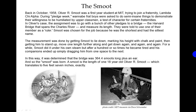Smoot was chosen for the job because he was the shortest and had the silliest name. The measurement was done by getting Smoot to lie down, marking his height with chalk and paint, then getting him to stand up, move one length further along, and get down again. After about a hundred times he became tired, and his companions ended up simply dragging him from one space to the next. It was determined that the bridge was 364.4 Smoots long, plus an ear. And so the Smoot was born.